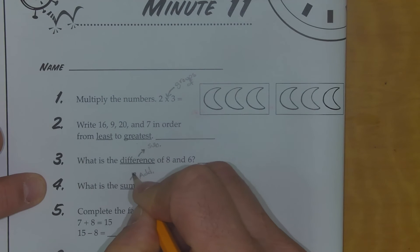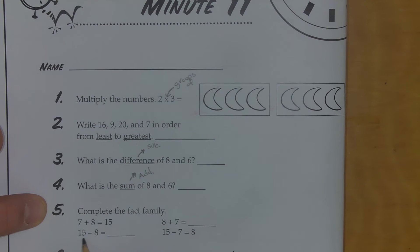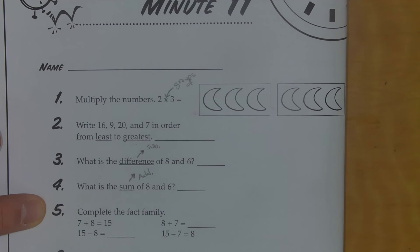So I'm going to go ahead and put add there. I'm going to fix my arrow. And then number 5: complete the fact family. 7 plus 8 equals 15, 15 minus 8 equals something, 8 plus 7 equals something, and 15 minus 7 equals 8. So go ahead and pause your video and finish the first 5 and come back and check in just a second.